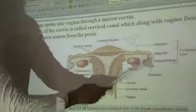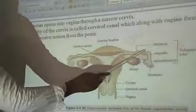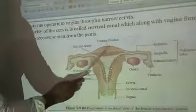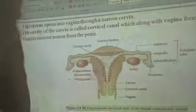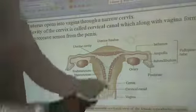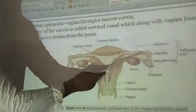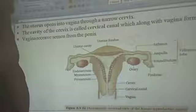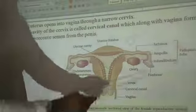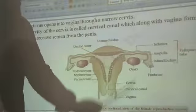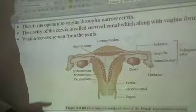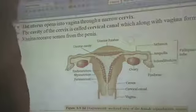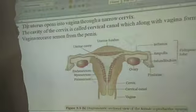From the ampulla region, the zygote passes into the isthmus region, which is opened into the pear-like structure called the uterus. The function of the fallopian tube is the transportation of the ovum and the fertilized zygote.